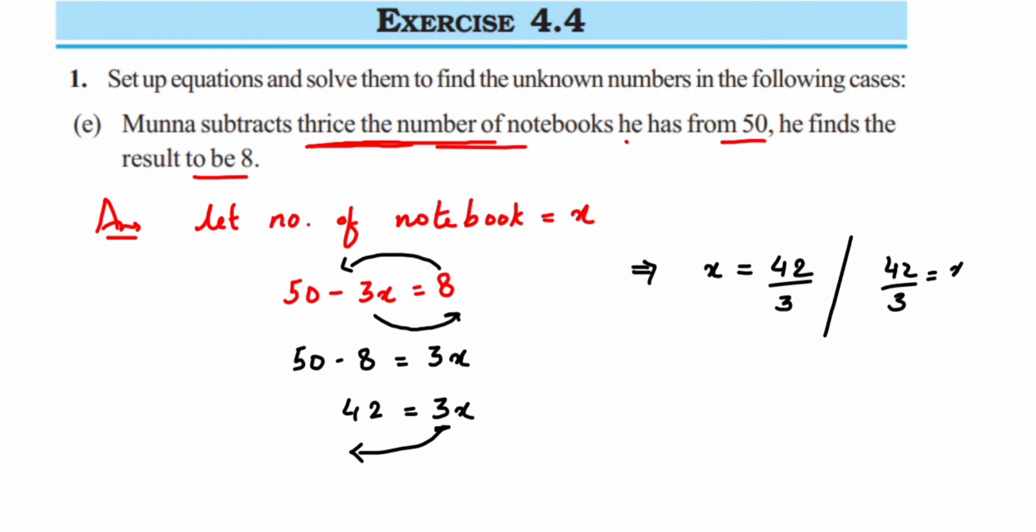You just interchange your LHS and RHS, it doesn't affect the answer, it will remain the same. So from here you can cancel 42 and 3—this is 3 once and here you can divide it or cancel it. This will be equal to 14, so therefore x = 14.